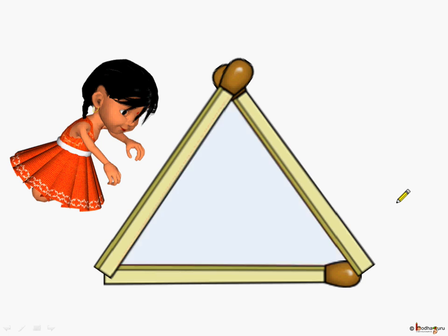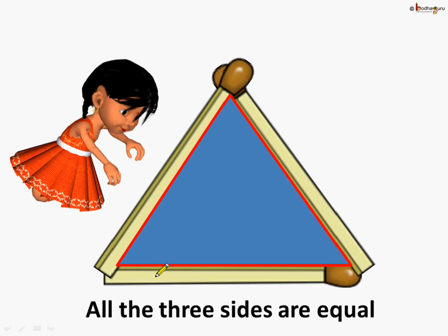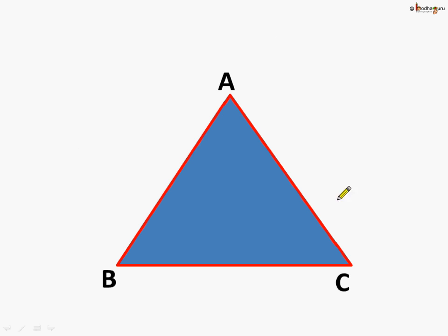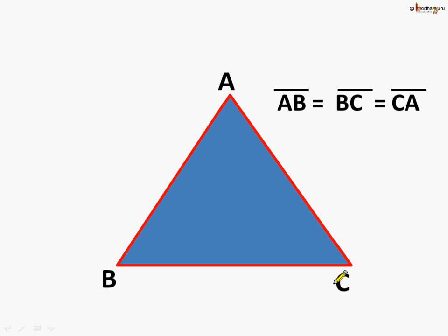If we measure the sides of this triangle, all the three sides are equal — meaning the lengths of all three sides are the same. This type of triangle is called an equilateral triangle, where line segment AB is equal to line segment BC, which is equal to line segment CA.